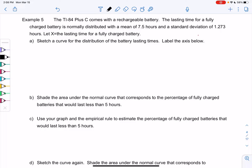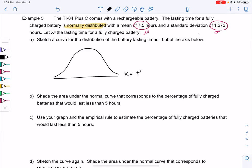The lasting time for a fully charged battery is normally distributed. Super important, that means we'll use the normal curve. With a mean of 7.5 hours and a standard deviation of 1.273 hours. So that's our mu and sigma. We're going to let x be the lasting time for a fully charged battery.